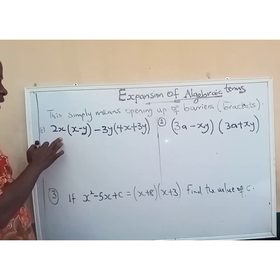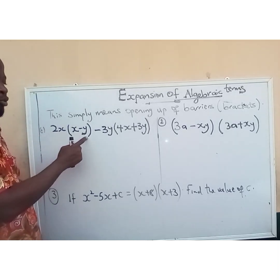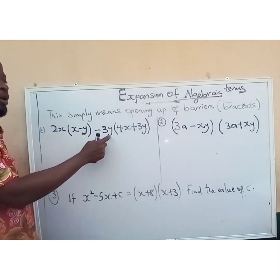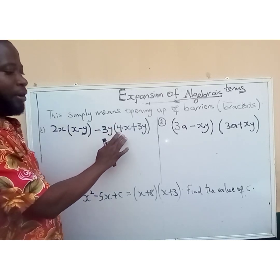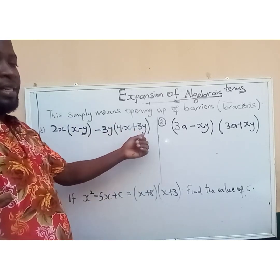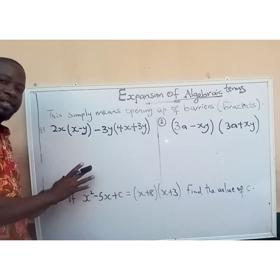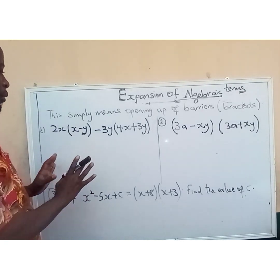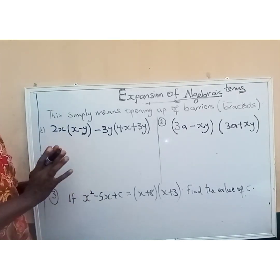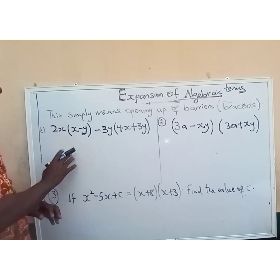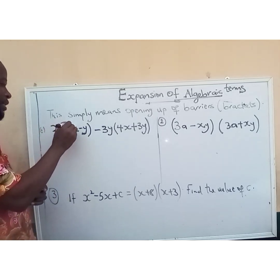The first question is: 2x open bracket x minus y close bracket, minus 3y open bracket 4x plus 3y close bracket. We just want to expand this. In order to do this, we use the outside term to multiply everything inside the bracket.